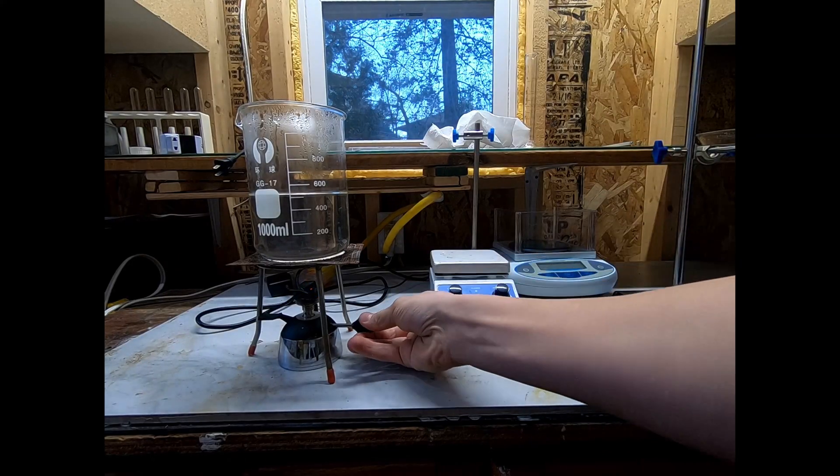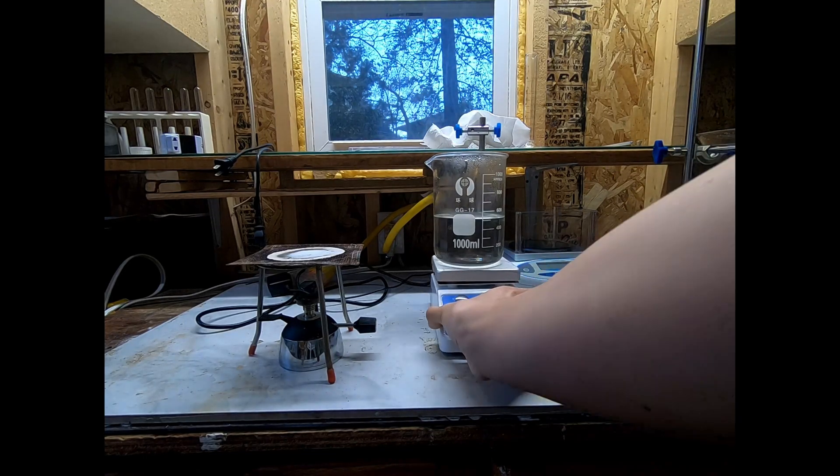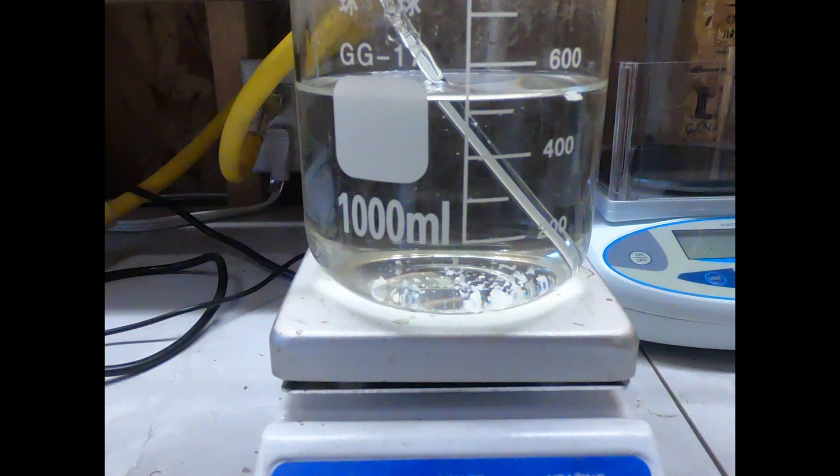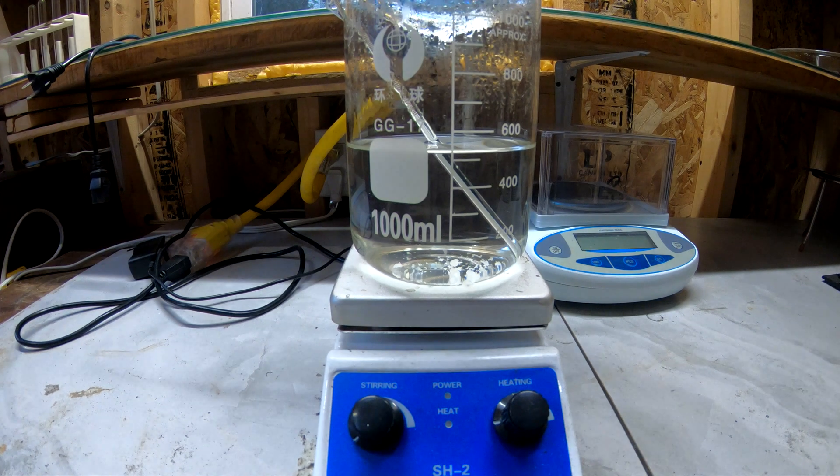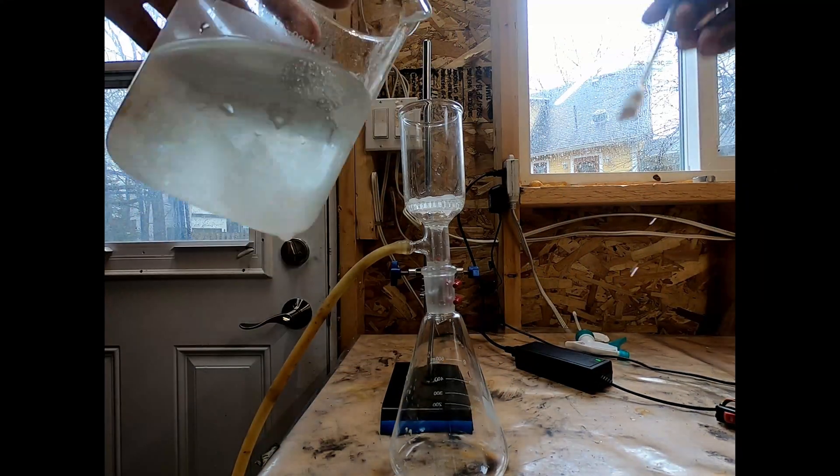Once I had evaporated enough water, I took the mixture off the burner and placed it on my now cooled hot plate to let it cool to just above room temperature. As you can see, some nice white crystals form. Once this happened I placed it in the refrigerator for several hours, which gave me a bunch of nice white sodium carbonate crystals.